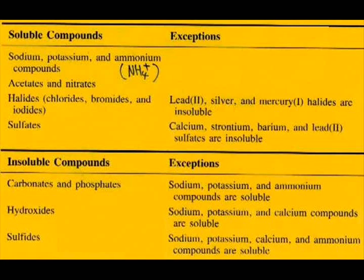Now if you take a look on your chart, you can see the first entry that has sodium, potassium — your group 1A metals essentially — and also ammonium. Any compound containing those is going to be soluble no matter what, no exceptions. So that basically means that if anything is paired with those things, it's going to be soluble. And if you go further down, you also see the nitrates and the acetates — same thing. Anything with those is going to be soluble no matter what, so essentially those are all going to be soluble salts.